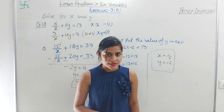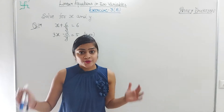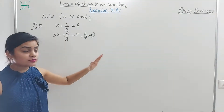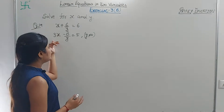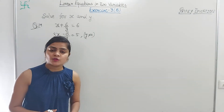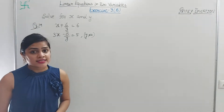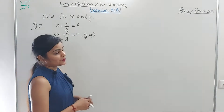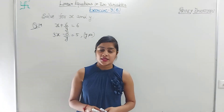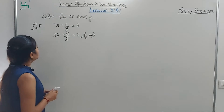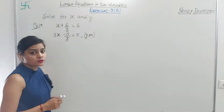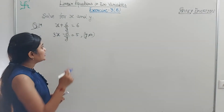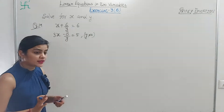Now question number 19: x + 6/y = 6 and 3x - 8/y = 5. How do we solve this? It is very easy — just as we solved question 18, we will solve this the same way. Here the variable y is in the denominator, so we cannot take LCM directly since it would give xy terms.